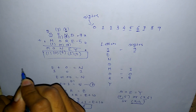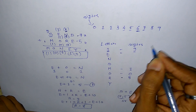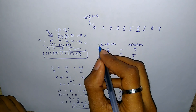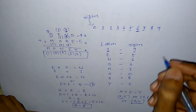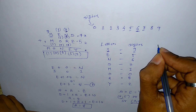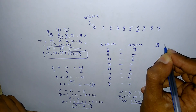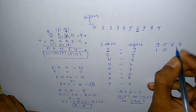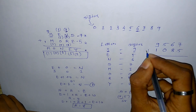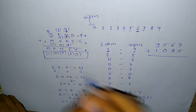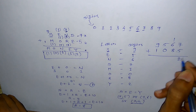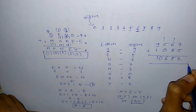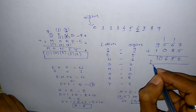So we got our answer. Let's tally by assigning all values: S is 9, E is 5, N is 6, D is 7, M is 1, O is 0, R is 8. When you make this addition: 7 plus 5 is 12, carry is 1; then 15, carry is 1; then 6; then 9 plus 1 is 10. You must get this answer, and that is the solution to this problem.